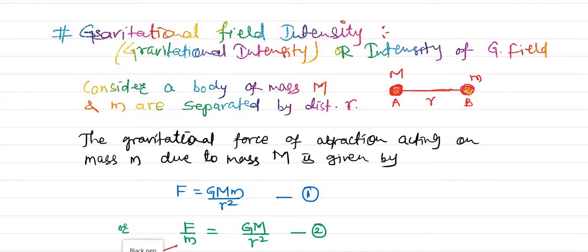In the last video we saw that the gravitational field is simply the region around a particular body or mass in which another body feels the force of attraction. Now, let us take two bodies: one of mass M and another of mass m, at two different points A and B, with separation r between them.